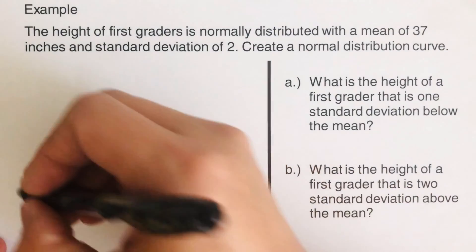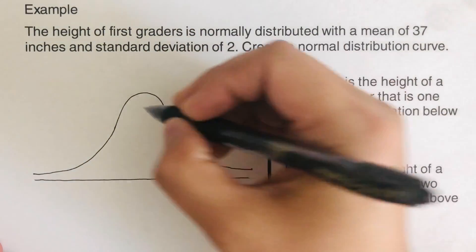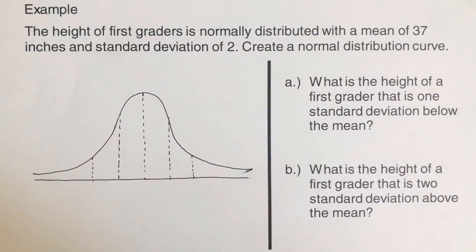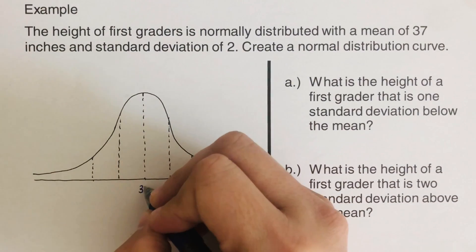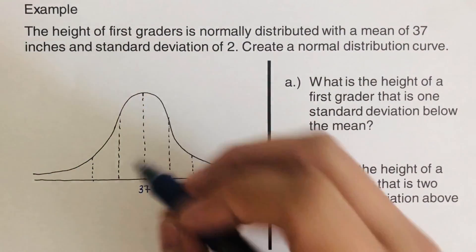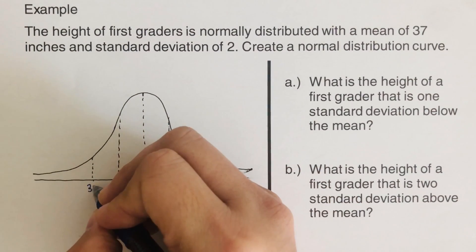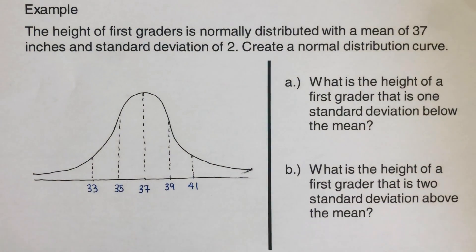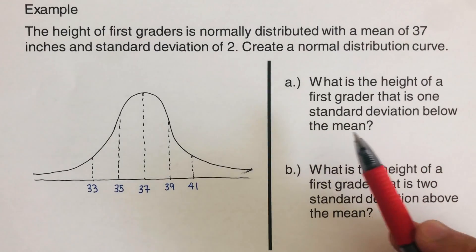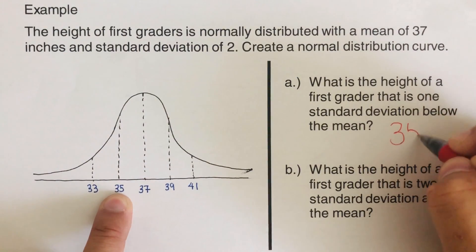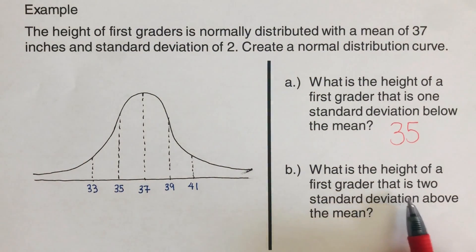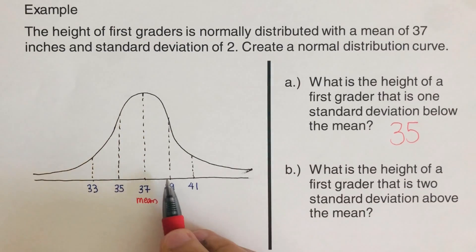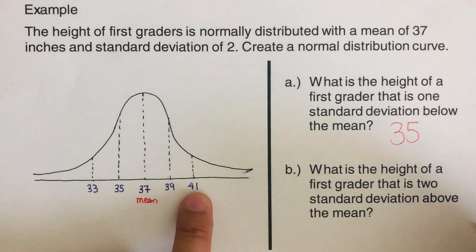We create the bell curve. The mean is 37, so I write 37 in the middle. One standard deviation below is 35, and two standard deviations below is 33. Going up, 37 plus 2 is 39, and two standard deviations above is 41. So the height one standard deviation below the mean is 35, and two standard deviations above the mean is 41.